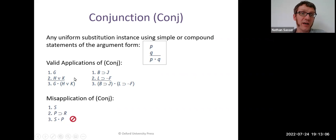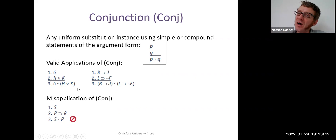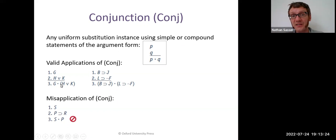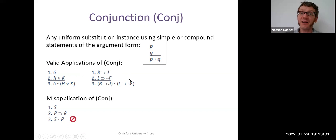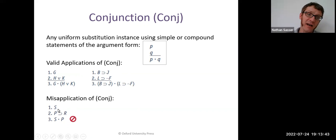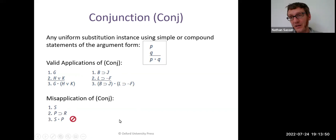So if you've got G and you've got 'H or K', then you can conclude 'G and (H or K)'. Remember, if one of the conjuncts you're putting together is a compound statement, you better put parentheses around it. If you leave out the parentheses, that is not valid. Make sure you put parentheses around a compound conjunct. Or if you've got 'if B then J' and 'if L then not F', you can put parentheses around those and say '(if B then J) and (if L then not F)'.